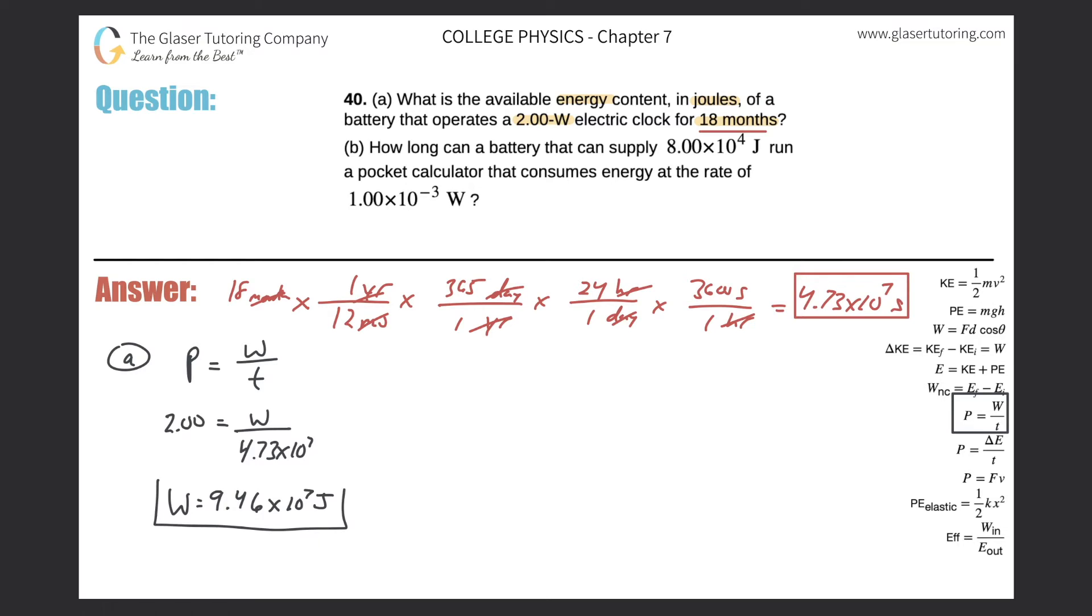Okay great. Now let's take a look at letter B. I'll write it over here. Let's read the question: How long can a battery that can supply 8 times 10 to the 4 joules run a pocket calculator that consumes energy at the rate of 1 times 10 to the minus 3 watts?